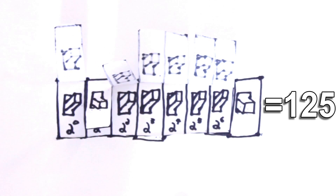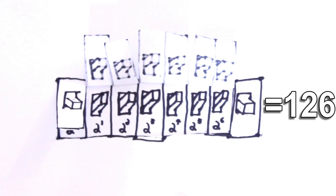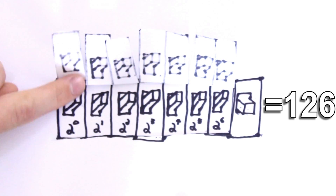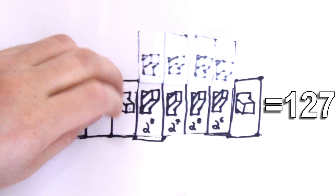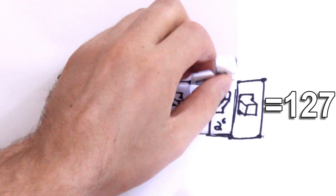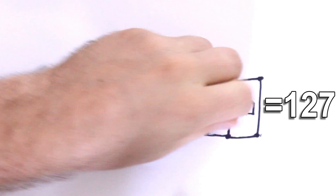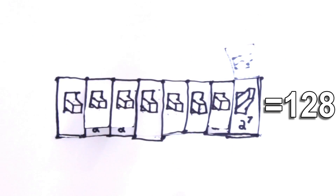Just keep going. Click. 125. Click click. 126. Click. 127. And click click click click click click click click click. 128. Binary.